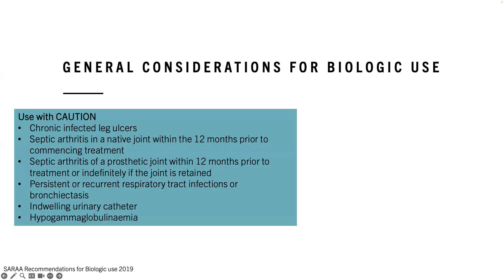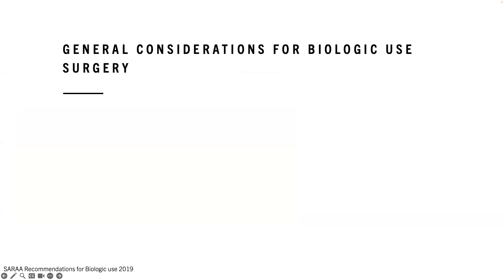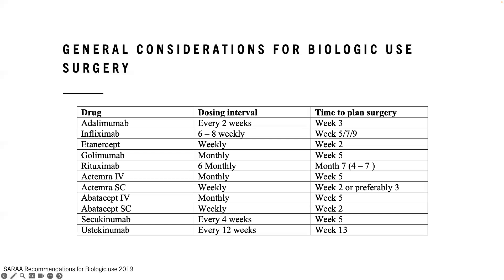Some general considerations for biological use from the South African Rheumatological Association: use biologics with caution (not avoiding them) where there are chronic wounds, previous recent septic arthritis in native or prosthetic joints, recurrent respiratory infections, permanent catheters, or other reasons for hypogammaglobulinemia. Surgery is a consideration — there is some evidence that risk of surgical site infection is increased with some biologic use. Some recommend planning surgery between dosing intervals to minimize the biologic's effect around the time of surgery, though this is not always possible.